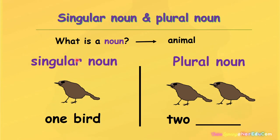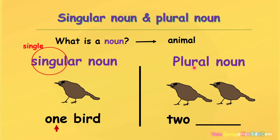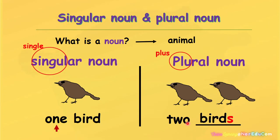What is the singular noun? The singular noun means single. It means that there is one of something. For example, one bird. What is the plural noun? The plural noun means plus. It means that there is more than one. Two birds. We need to add S to make a plural noun. One bird, two birds.